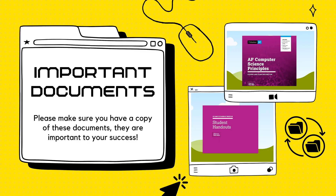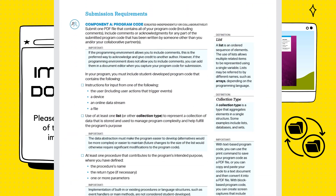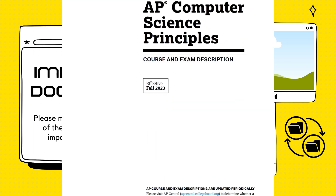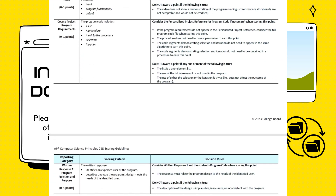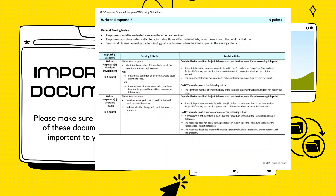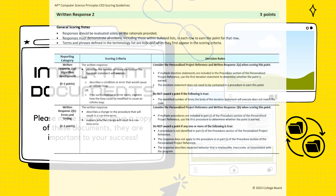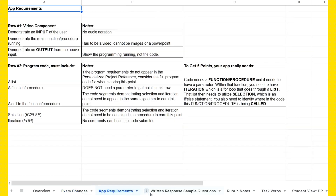The first document is the AP CSP Student Handout — make sure it's effective Fall 2023. The second is the AP CSP Exam and Course Description, again effective Fall 2023. You'll also want the Rubric Part 1, the Rubric Part 2, and a spreadsheet I developed, which will be linked down in the description.